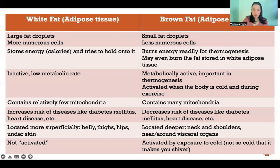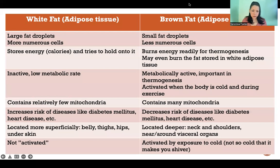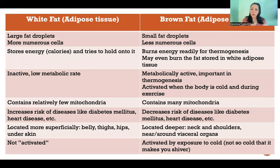So brown fat and white fat — we're just talking about two types of adipose tissue, meaning fat tissue. To sum it up: white fat is the bad kind and brown fat is the good kind. And I'm going to explain why that is.